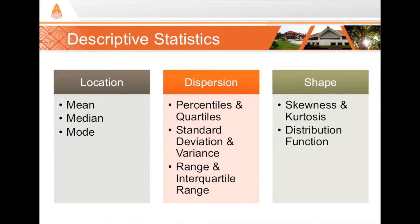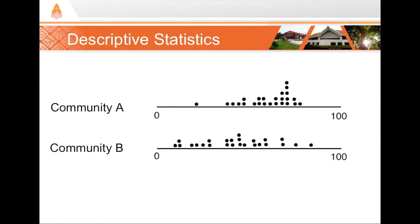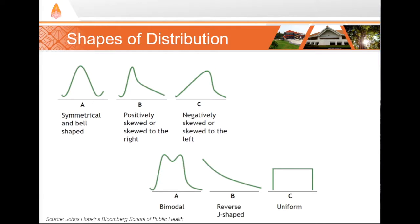And so, the last characteristic of data is its shape. Is the data distributed normally? Is it skewed left? Is it skewed right? We can calculate values that measure how skewed the data is. And those values are called things like skewness or kurtosis. And we can also find the distribution function that best describes our data's shape. I won't spend time going through how to calculate those values in this session. However, let's look quickly at the shape of our two data sets. The ages in Community A are clustered on the right with a long tail to the left. So, we would say that this data is skewed left. The ages in Community B, however, are pretty evenly spread out. So, we would say that this data is uniformly distributed.